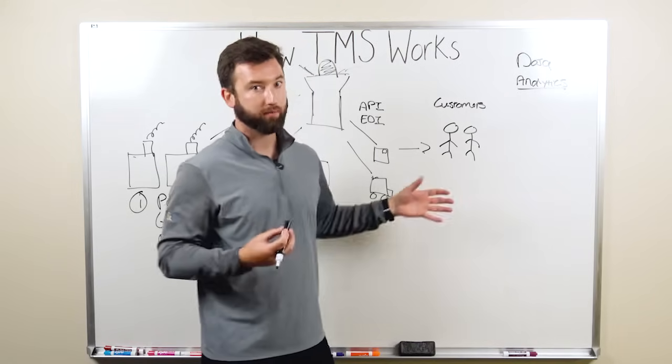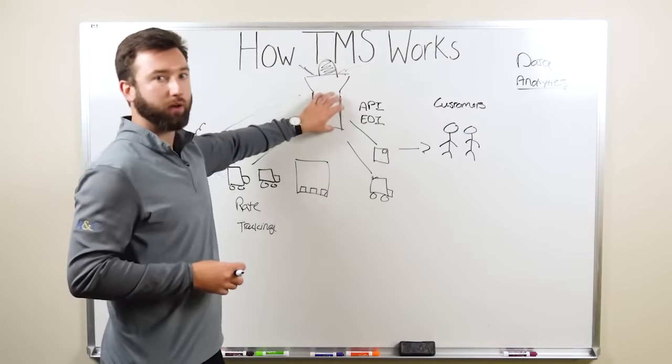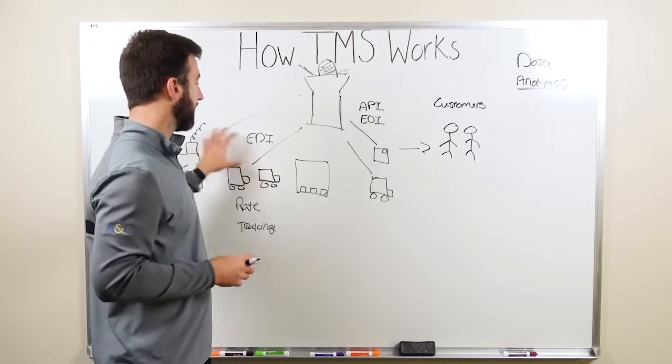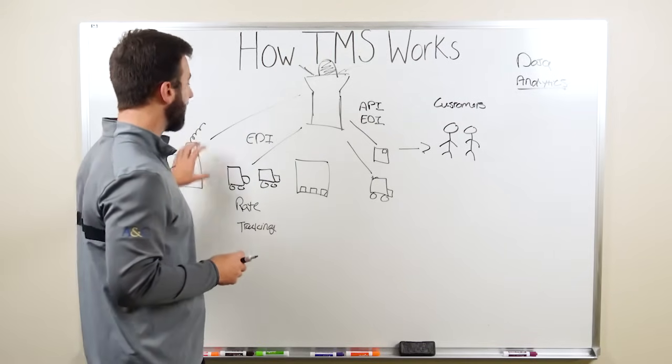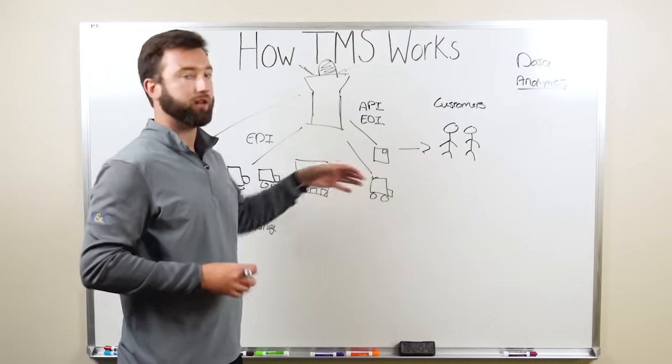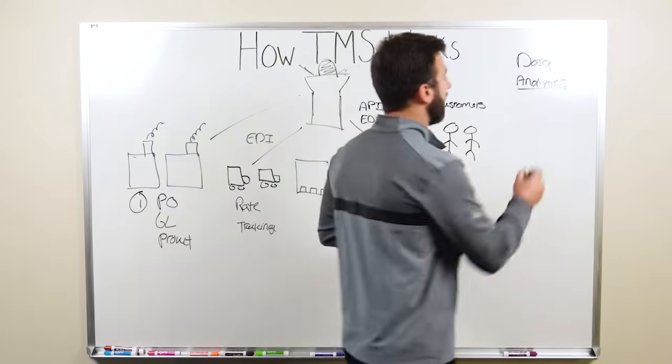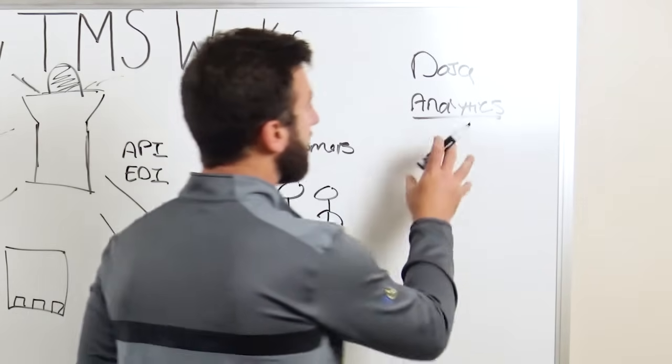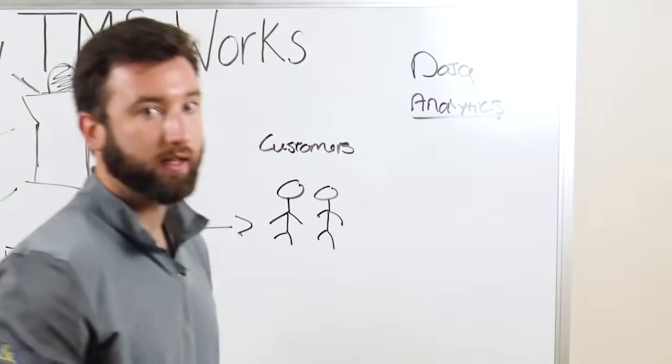The first step to optimizing your freight is really having this control tower TMS where you're able to capture all of the manufacturing, transportation, and distribution information across all your modes and consolidate it in one portal. That's where you're going to get really powerful data and analytics.